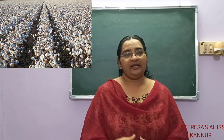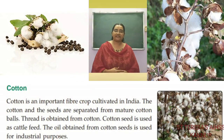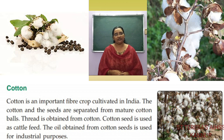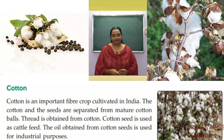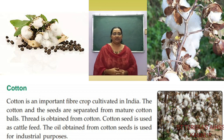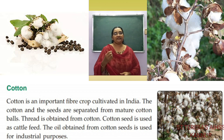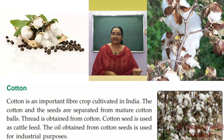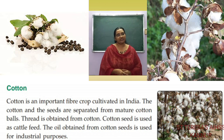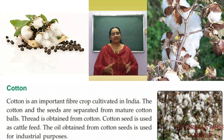Cotton is grown on a large basis and it comes out as a pod. The cotton is taken and used as a fiber for production of cloth. The seeds are separated and used as cattle feed, and oil is obtained from cotton seeds for industrial purposes. So cotton has two main purposes: the fiber is used for making cloth, and the seeds are used for cattle feed and producing industrial oil.